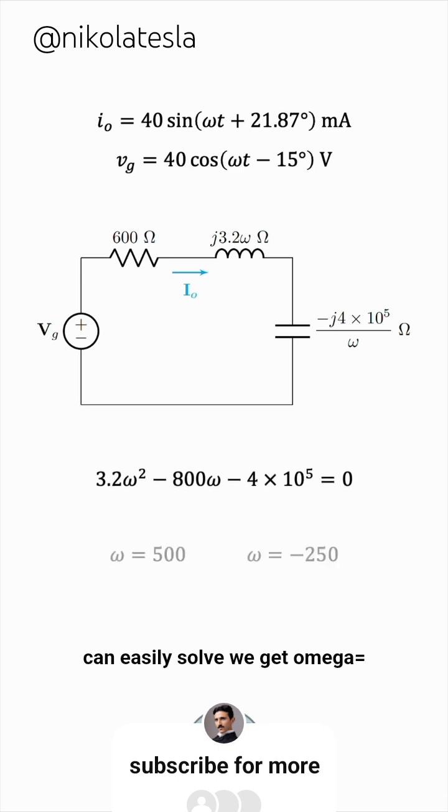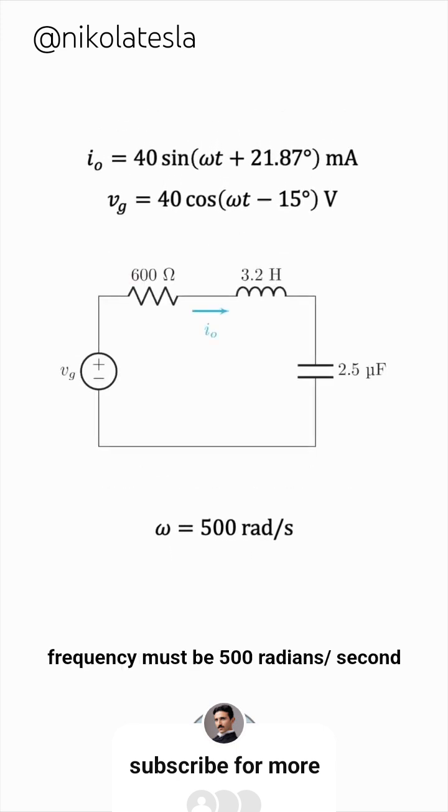We get omega equals 500, or negative 250. Of course, we only keep the positive solution. So, under the given steady state conditions, the angular frequency must be 500 radians per second.